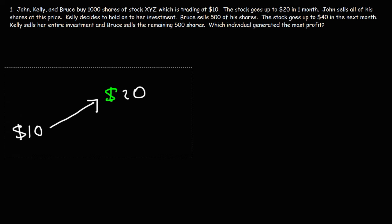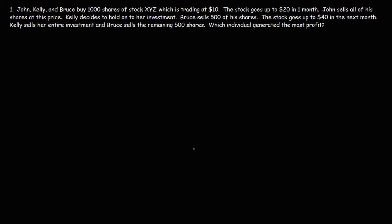Let's look at this example problem. John, Kelly, and Bruce each buy 1,000 shares of stock XYZ, which is trading at $10. The stock goes up to $20 in one month. John sells all of his shares at this price. Kelly decides to hold on to her investment. Bruce sells 500 of his shares. After that, the stock goes up to $40 in the next month. Kelly now sells her entire investment, and Bruce sells the remaining 500 shares. Which individual generated the most profit?